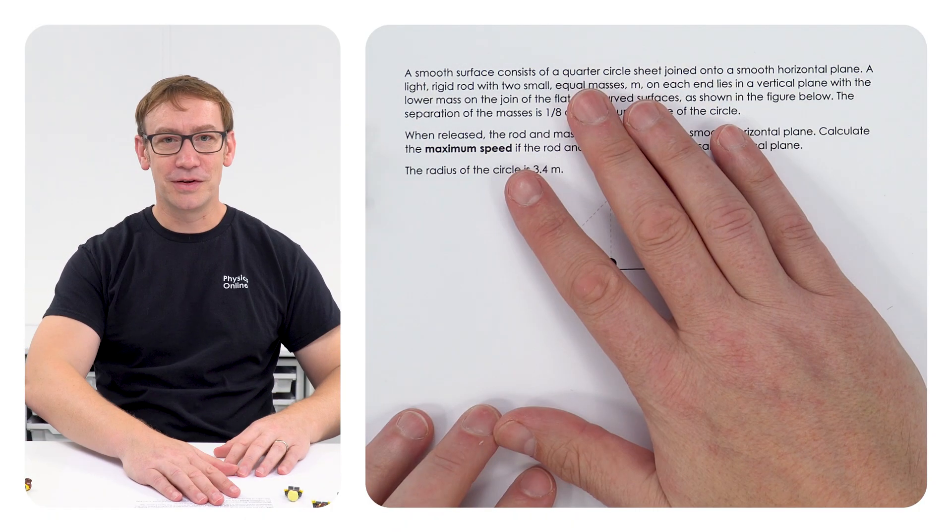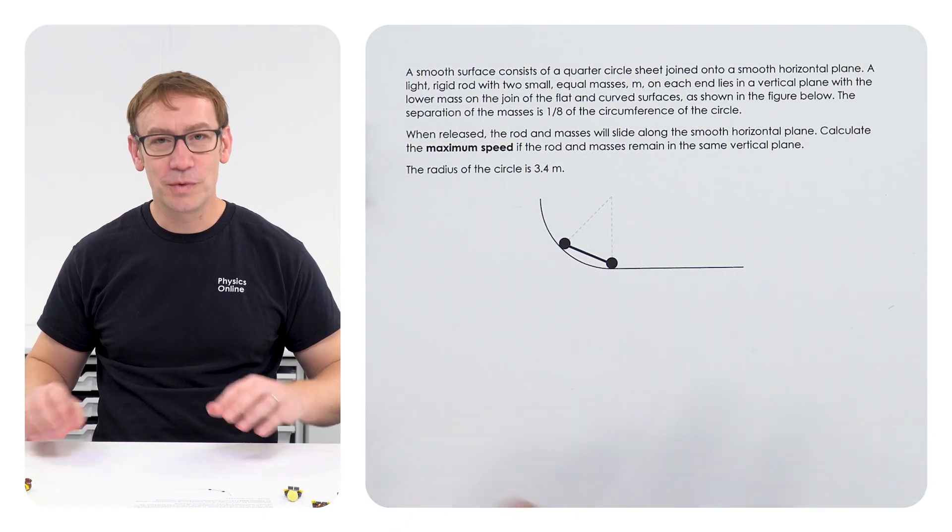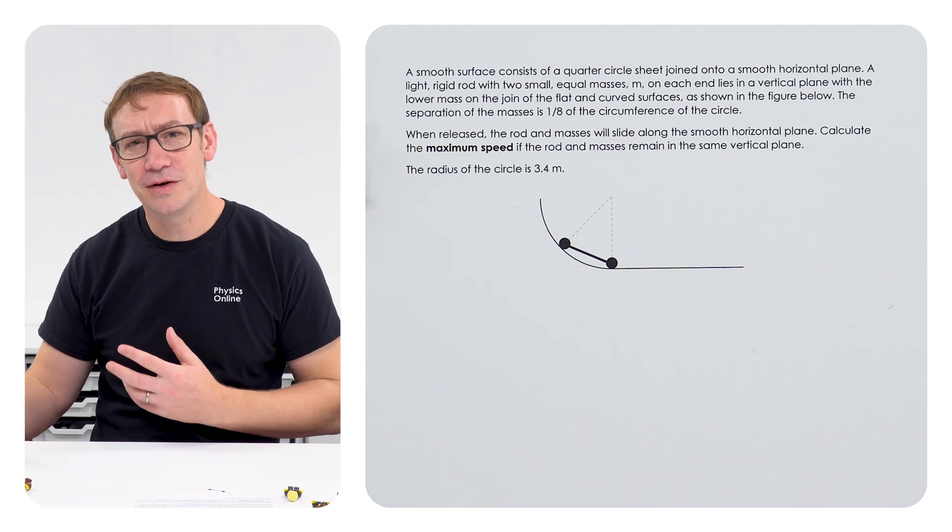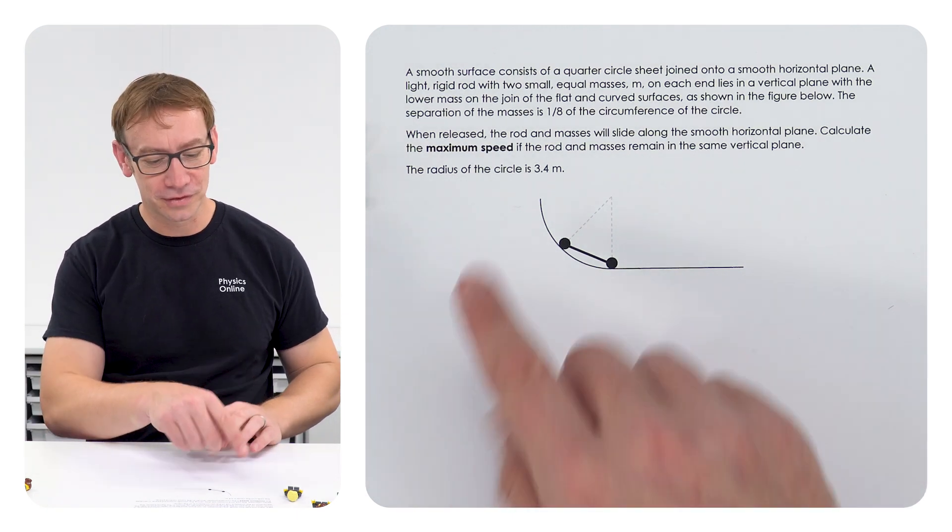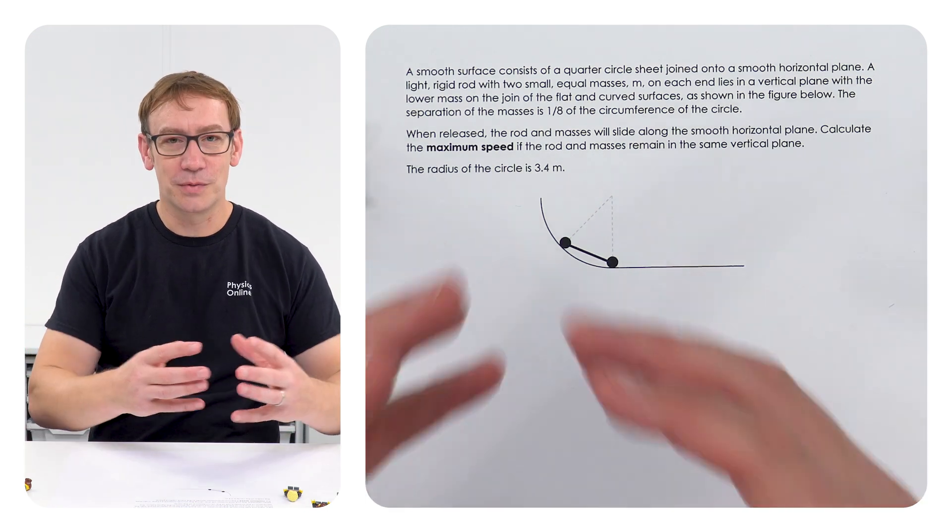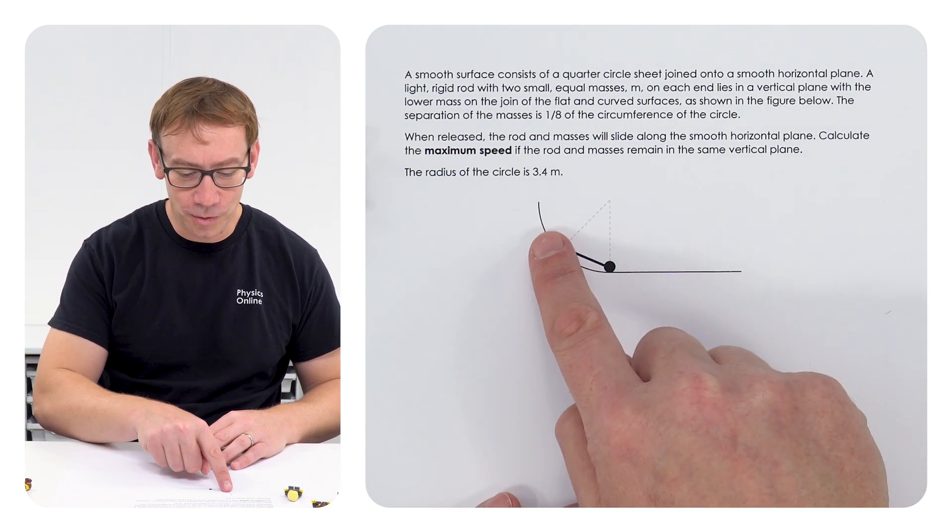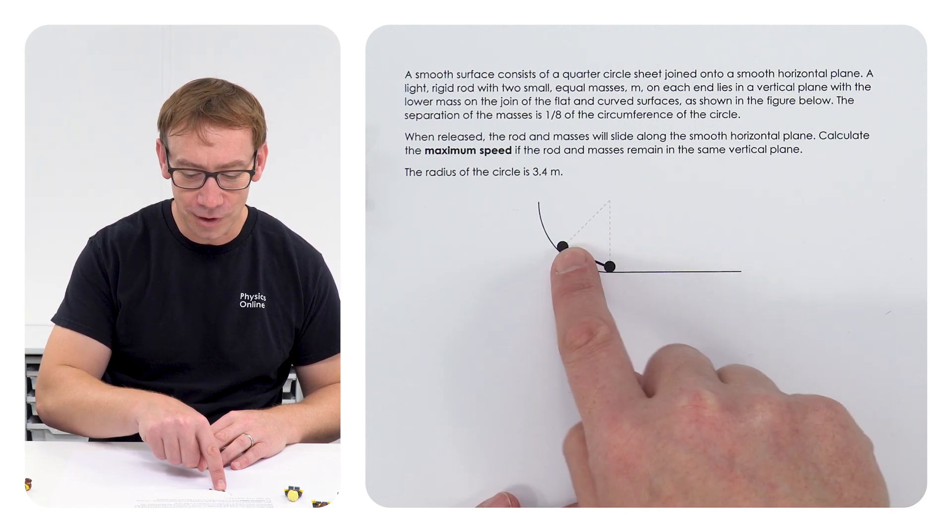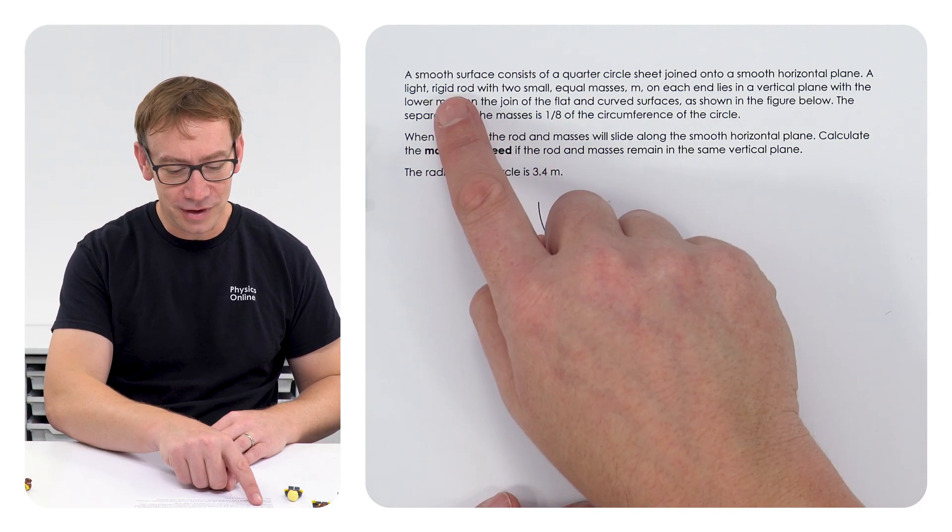So this is the question we have. We've got some terminology used in A-level physics quite a lot, so a smooth surface means there's no friction.